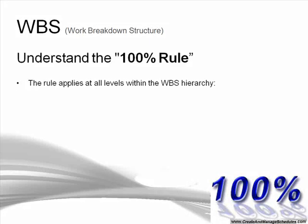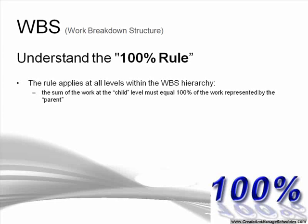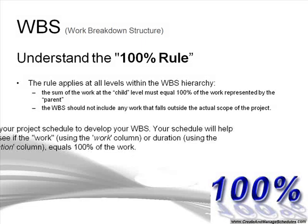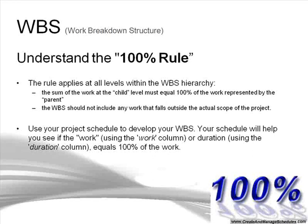The 100% rule applies at all levels within the work breakdown structure hierarchy. The sum of the work at the child level must equal 100% of the work represented by the parent. The work breakdown structure should not include any work that falls outside of the actual scope of the project. When you use your project schedule to develop your WBS, your schedule will help you see if the work using the work column or the duration column equals 100%.